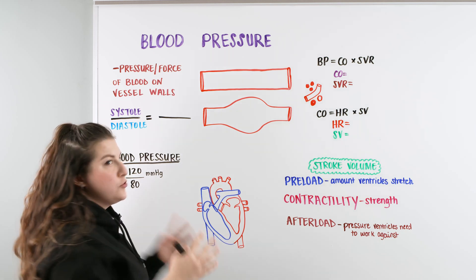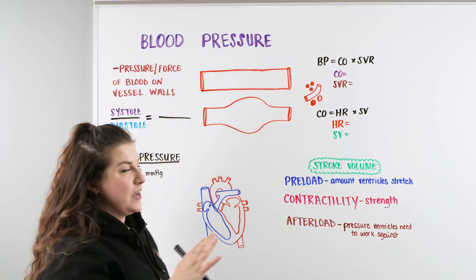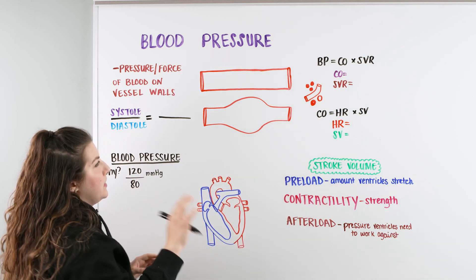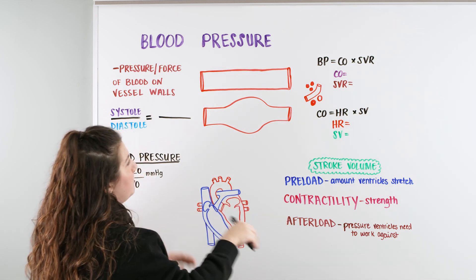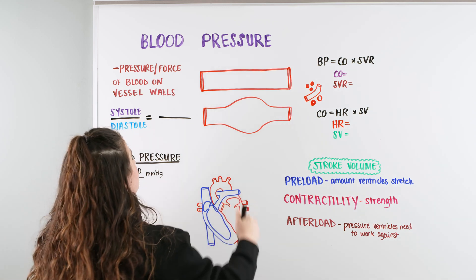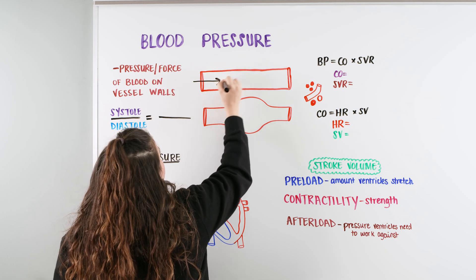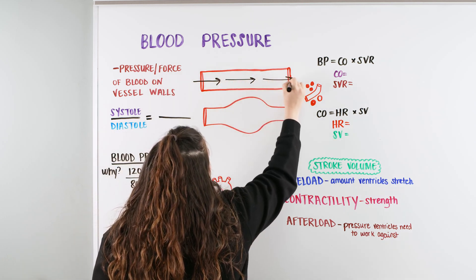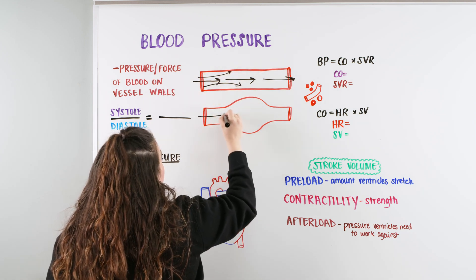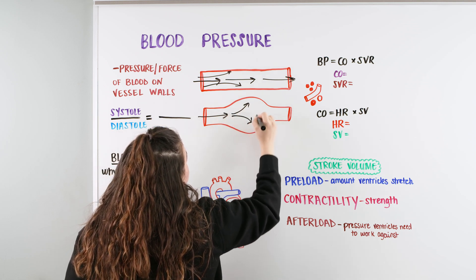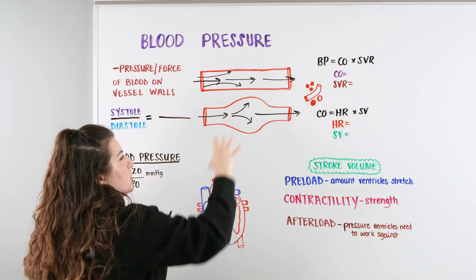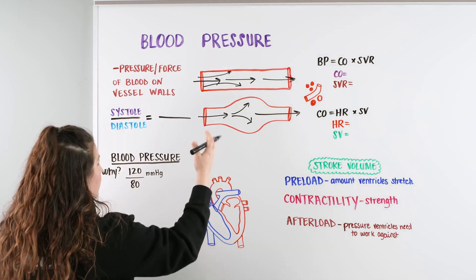We know that when our heart contracts, it forces out blood. And when the blood is forced out, it's going to go through our vessels, through our arteries, all the way down to our fingertips, all the way down to our feet. As it carries that blood, there is a pressure — when the heart contracts and when the heart relaxes. So as the blood flows through our vessels, it has this nice linear flow. But as it fills, sometimes there's a little pressure on the walls. And as that pressure is forced on the walls, there is a bulge that occurs. And that bulge is essentially the pressure that we get to measure on the wall of the vessel.